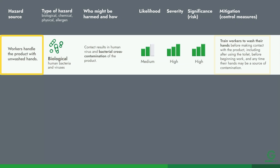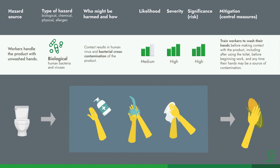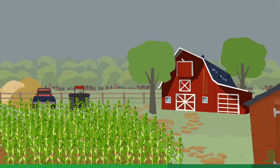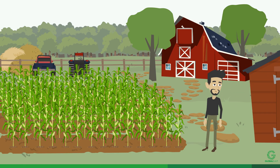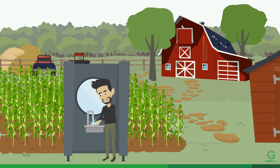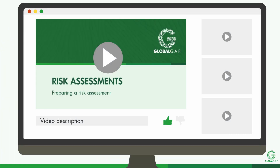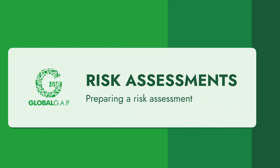For handwashing, train workers to wash their hands after using the toilet and before touching the product. Have handwashing stations in easily accessible locations to encourage handwashing. You can find additional resources in the video description. We hope you learned more about how to write a risk assessment. Thank you for watching.